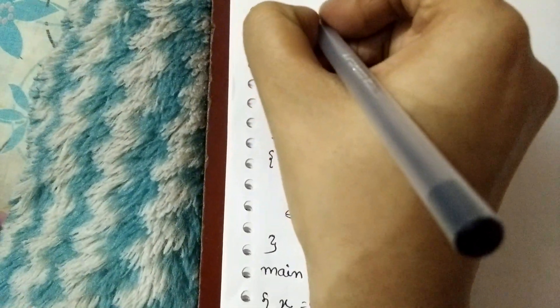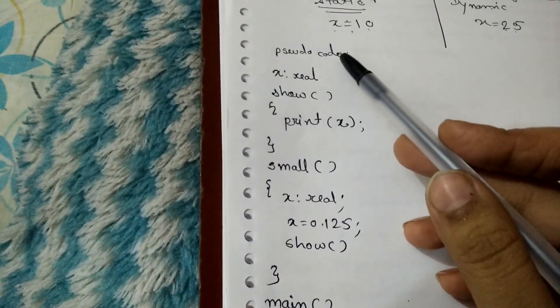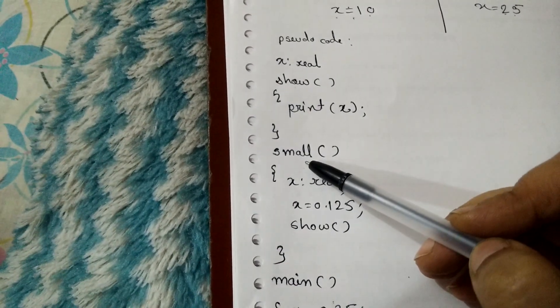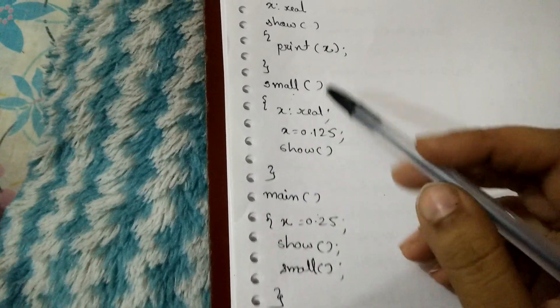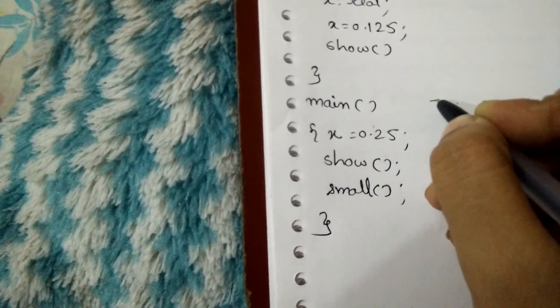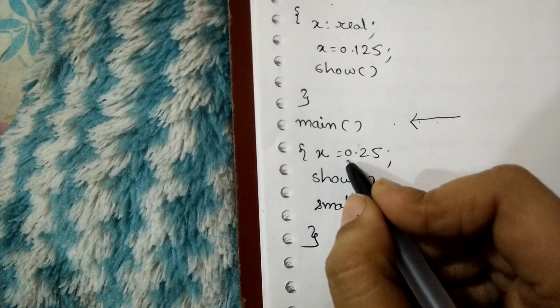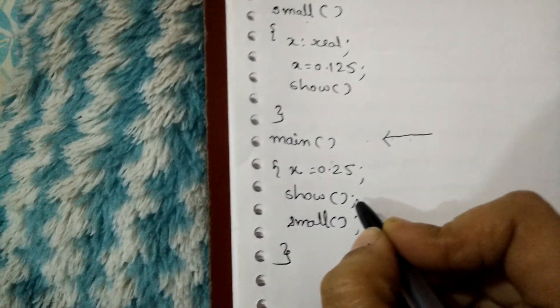Consider a pseudo code which has one main function and two other functions called show and small. We have a variable X. Execution starts from the main function. In main, the variable X has a value of 0.25. After that, the function show is called and control is passed to the function show. Inside the function show there is a single statement: print X.